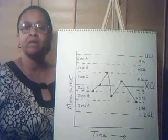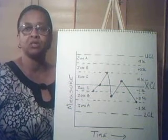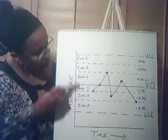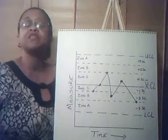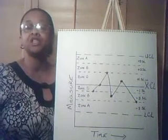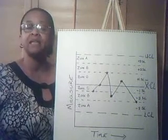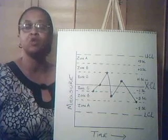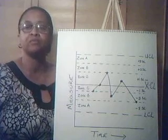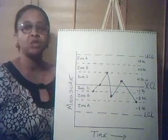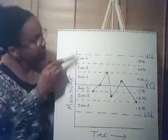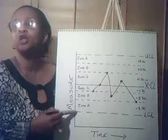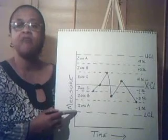Now let's talk about zones. The zones on a control chart represent the various deviations. They are not identified as a key feature of a control chart. Once you identify the upper and your lower control limits,